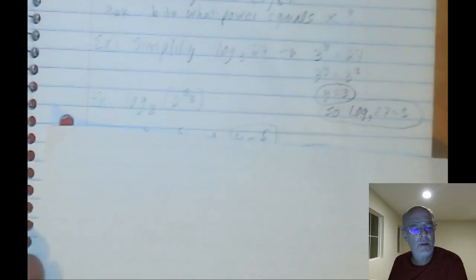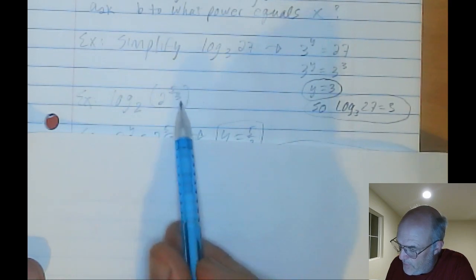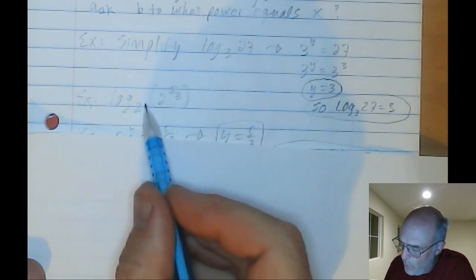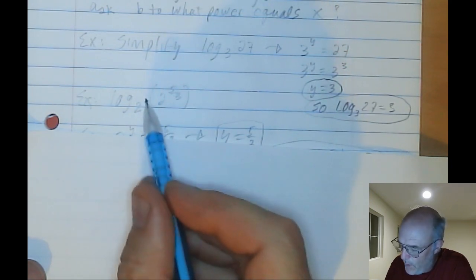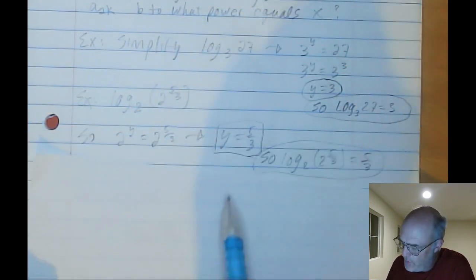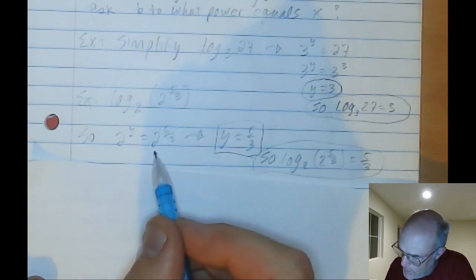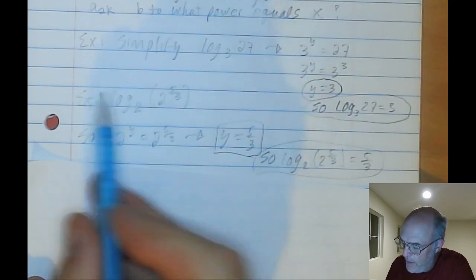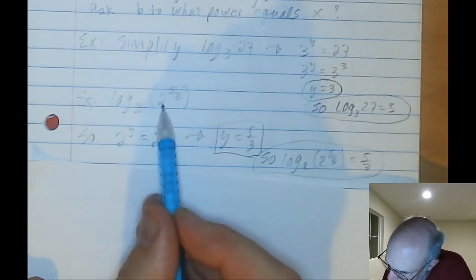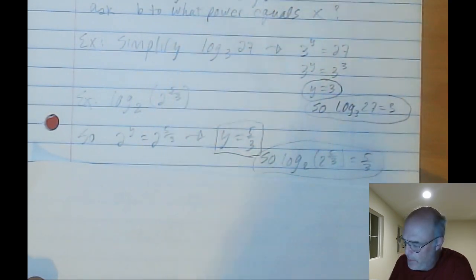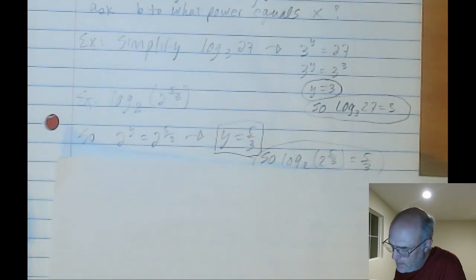Here's another example. Log 2 of 2 to the 5/3. 2 to what power equals that? Well, duh. 2 to what power equals 2 to the 5/3? Well, how about 5/3? 2 to the Y equals 2 to the 5/3. Y equals 5/3. That thing just equals 5/3 because these two numbers were the same. This was raised to a power.